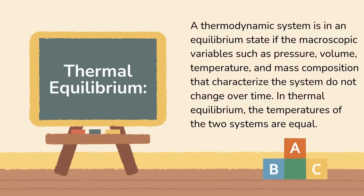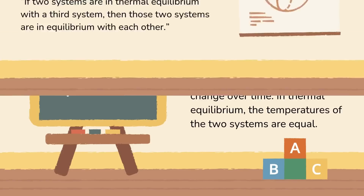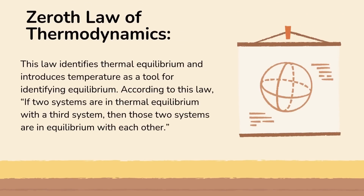What is thermal equilibrium? A thermodynamic system is in an equilibrium state if the macroscopic variables — such as pressure, volume, temperature, and mass composition — that characterize the system do not change over time. In thermal equilibrium, the temperatures of the two systems are equal.